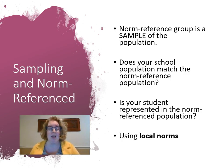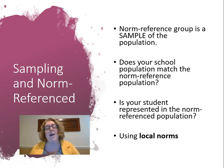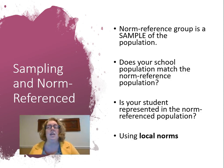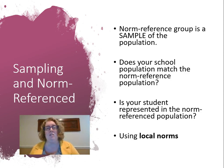Another thing to think about is the use of local norms. When talking about a national norm set, we're saying this is how my student compares nationally — which might not be as informative as using local norms. Knowing a student is in the 10th percentile nationally, it might be more important to know they're in the 20th percentile at the school level, because decisions are made at the school level. If a student is in the 80th percentile nationally but the 95th percentile at their school, you probably still need to provide special services.